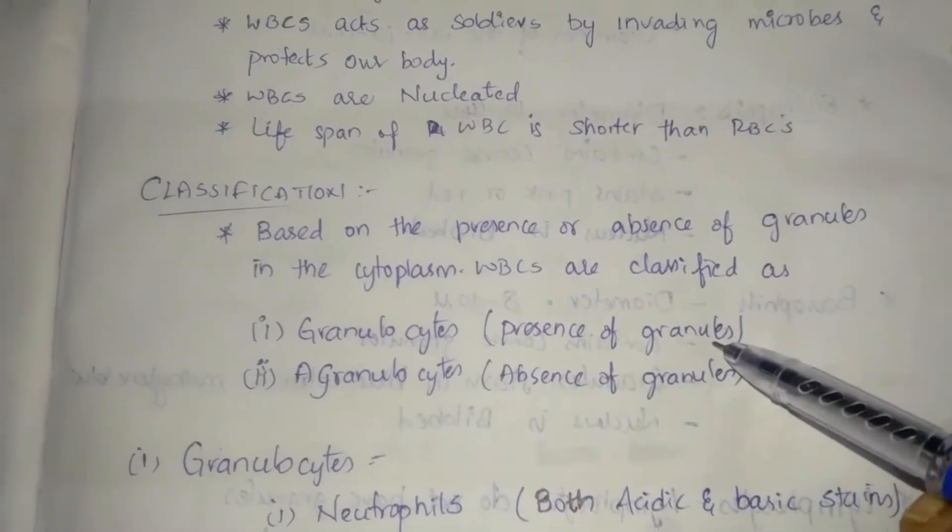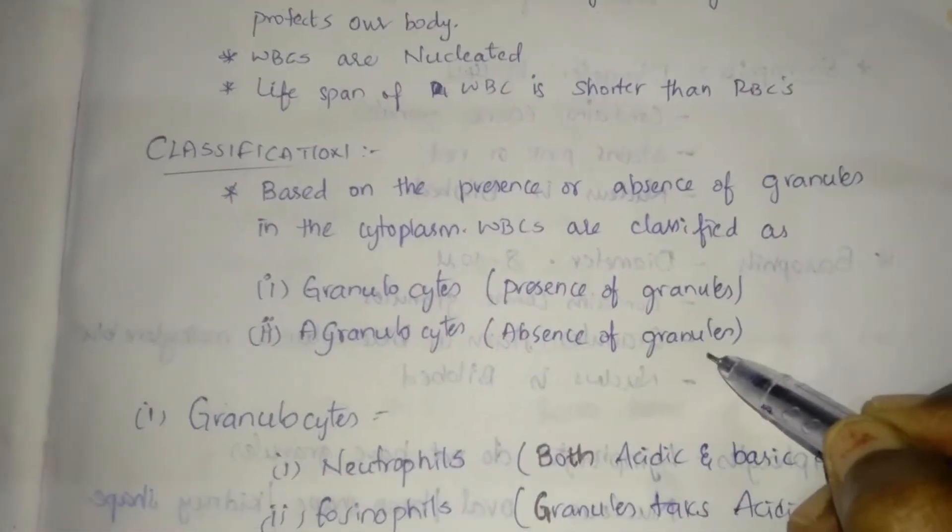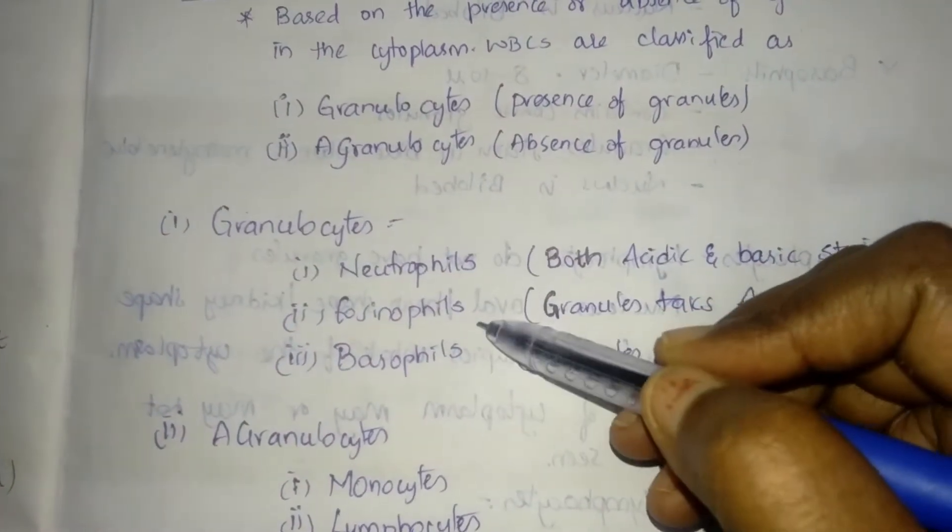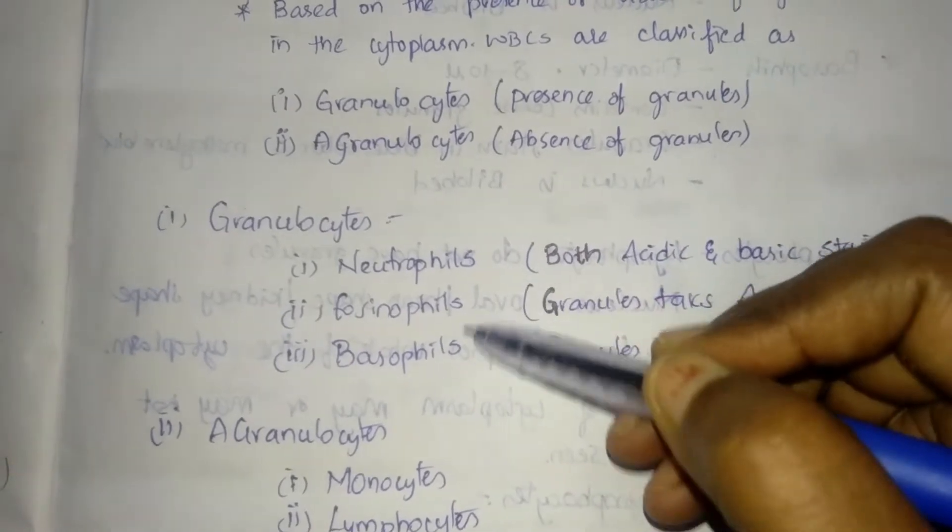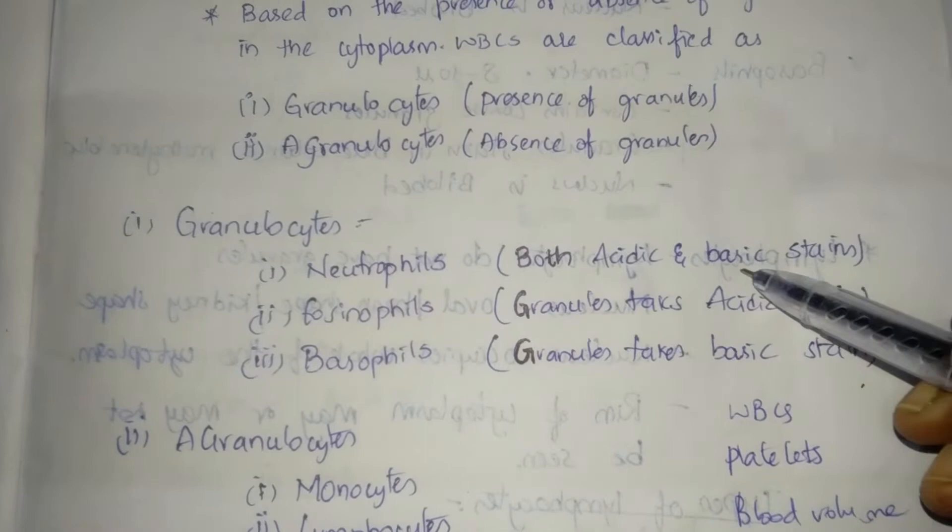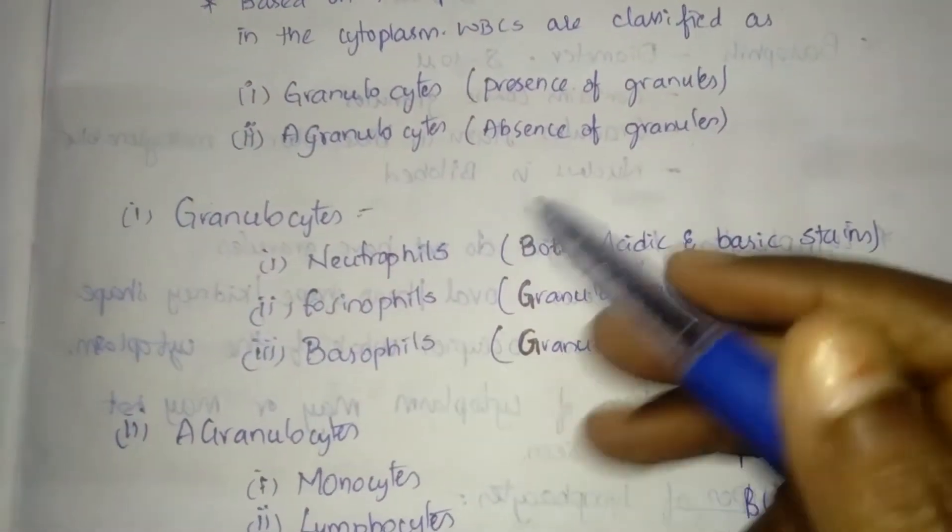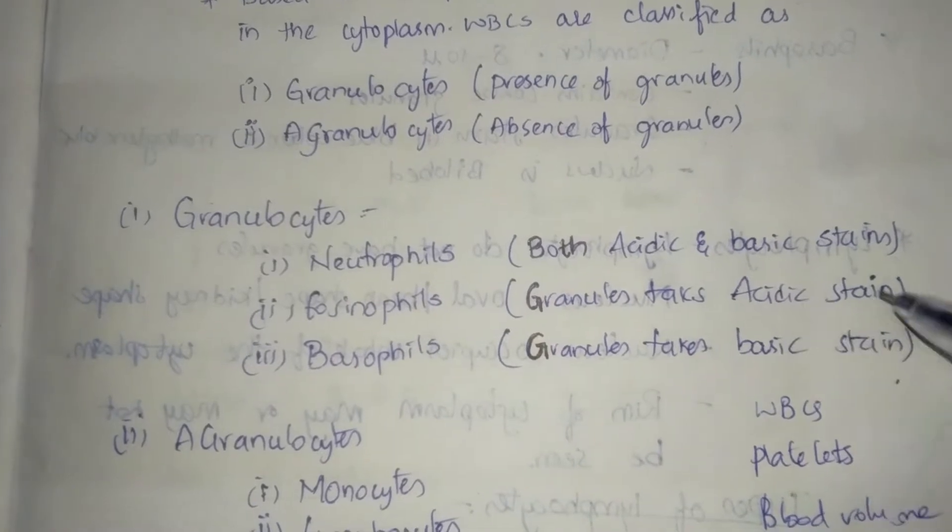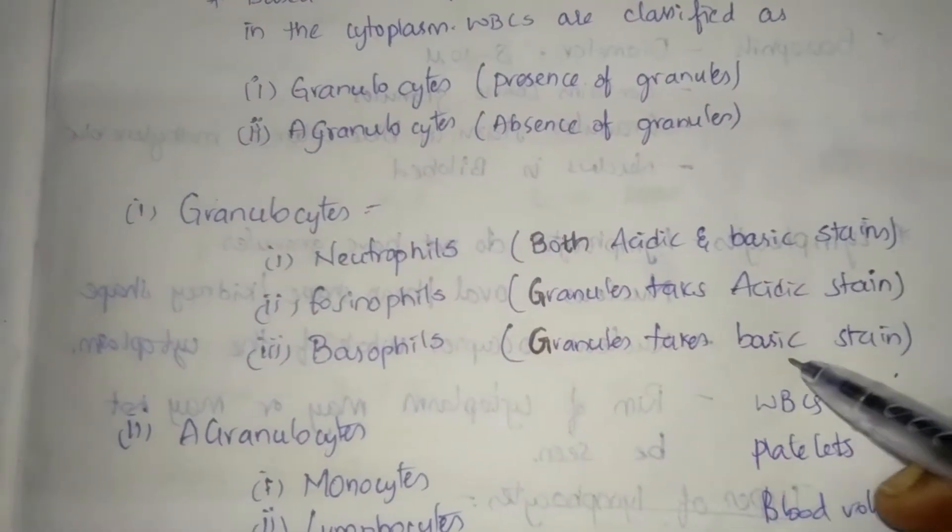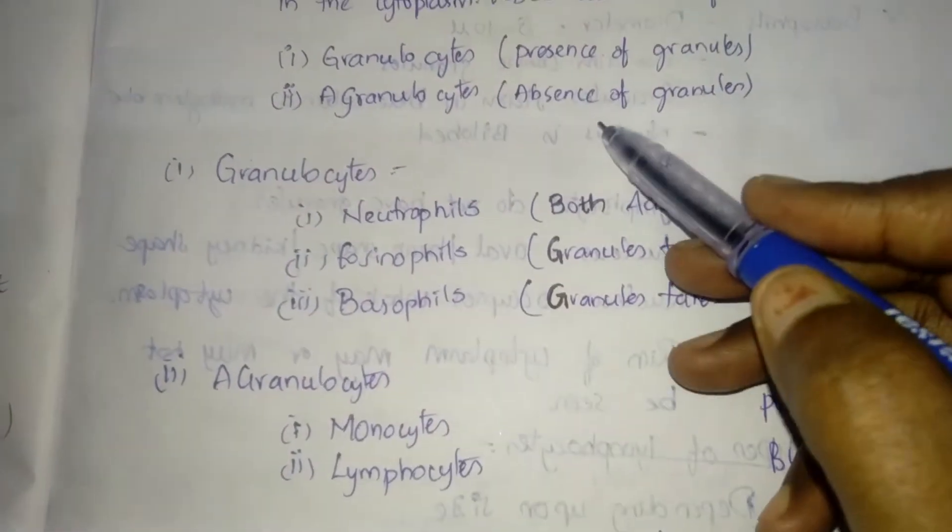Let's see about granulocytes. Granulocytes are of three types: neutrophils, eosinophils, and basophils. Neutrophils take both acidic and basic stains. Eosinophils' granules take acidic stain. Basophils' granules take basic stain. Agranulocytes means absence of granules.